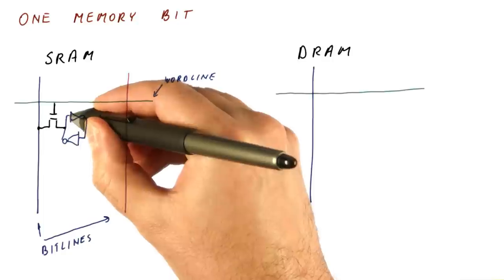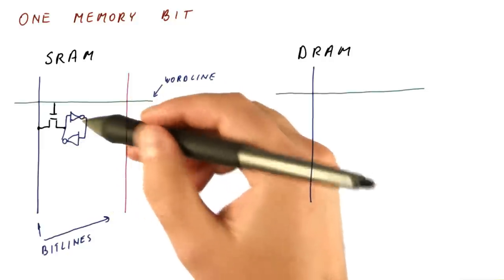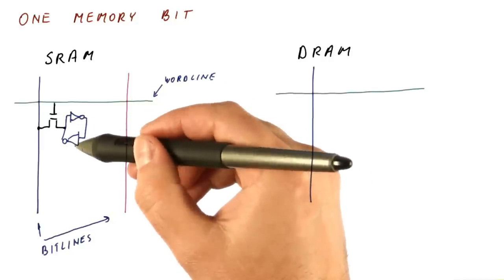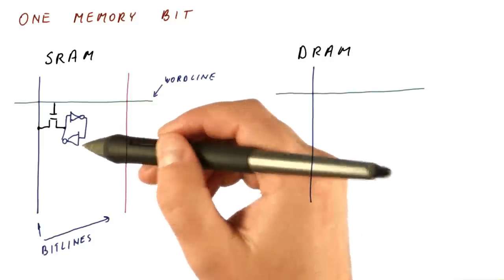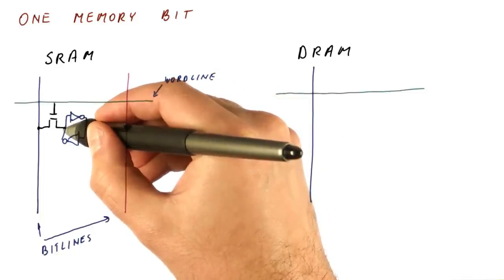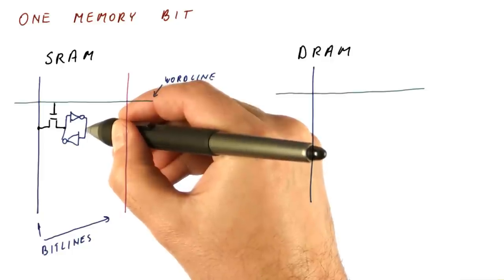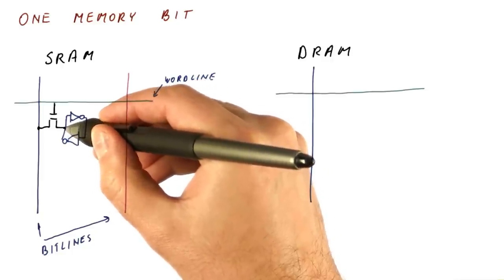In SRAM, the actual memory cell consists of two inverters. Each inverter has two transistors, that's how you build an inverter. And the idea is that if this is one here, then this inverter flips it and outputs a zero here. This other inverter flips that and outputs one here.